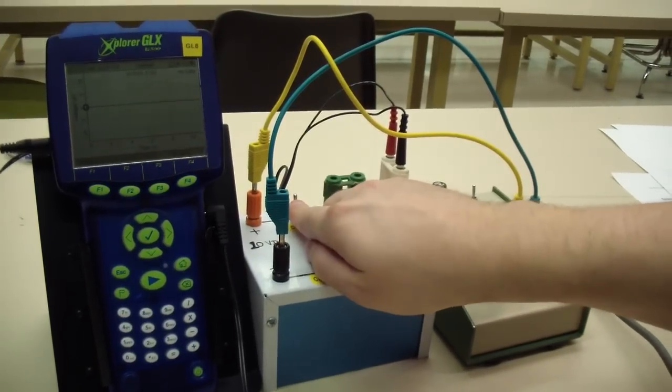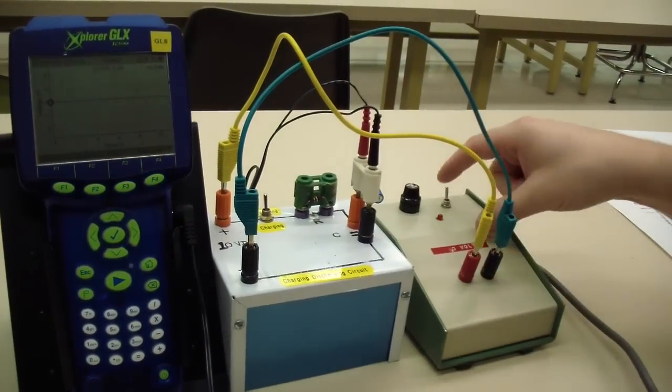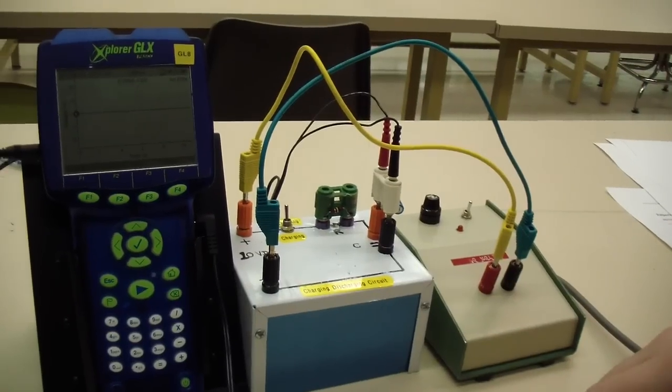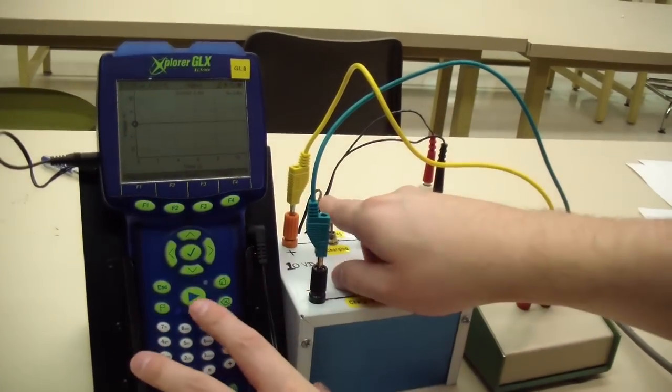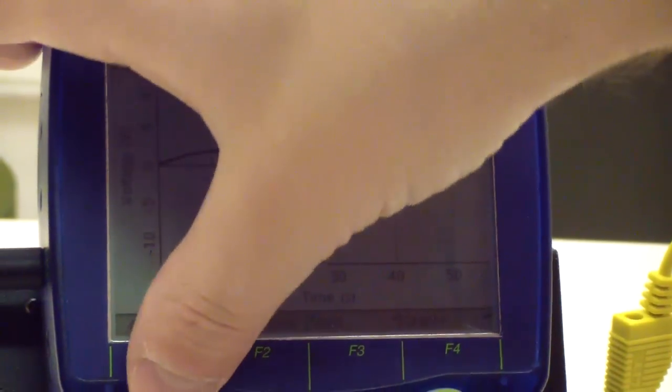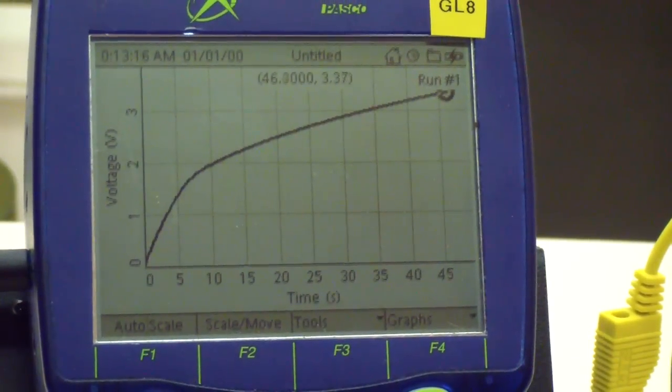Start with the switch set to discharge and turn on the voltage supply. You will then need to simultaneously set the switch to charging and press play on the GLX in order to collect your data. A graph of voltage versus time will then appear on the screen. You may want to press the auto scale button for convenient viewing.